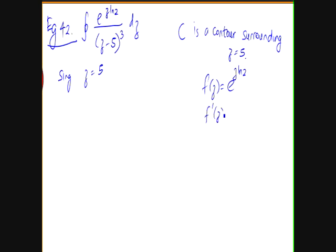So f dash z will be e to the z ln 2 times ln 2, and f double dash z will be e to the z ln 2 times ln 2 again, so ln 2 squared.